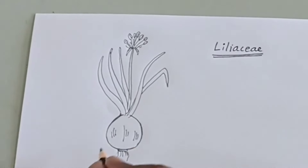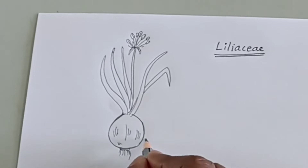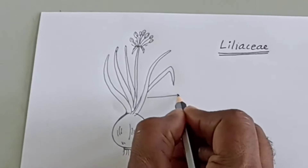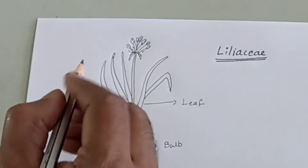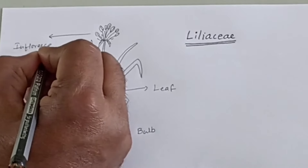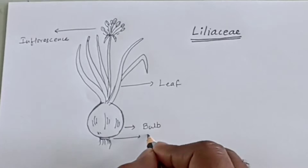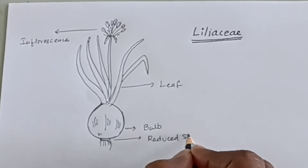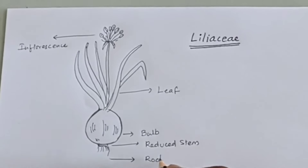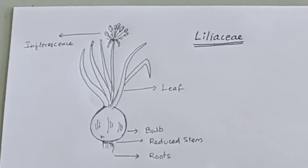Now we will label the parts. Okay, now we will label the bulbs, leaves, and inflorescence — Pushpa Vinyasa. This is the condensed stem, and these are the roots. This is the branch with inflorescence for lilies.